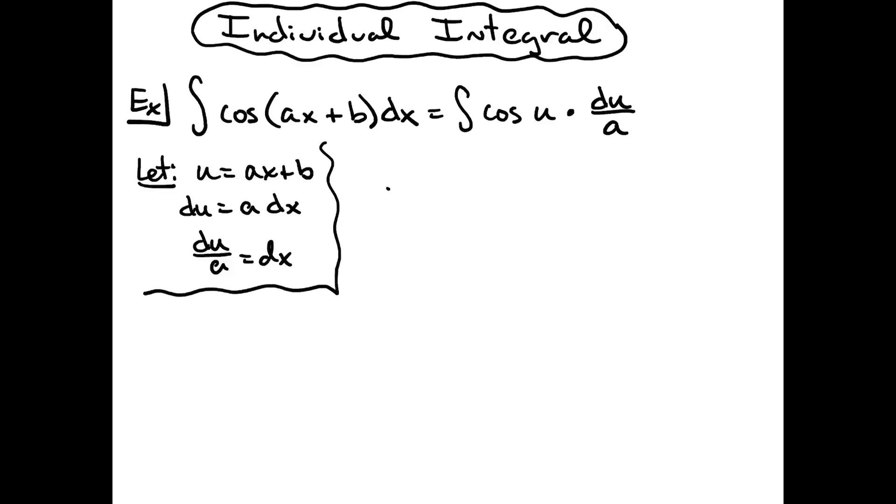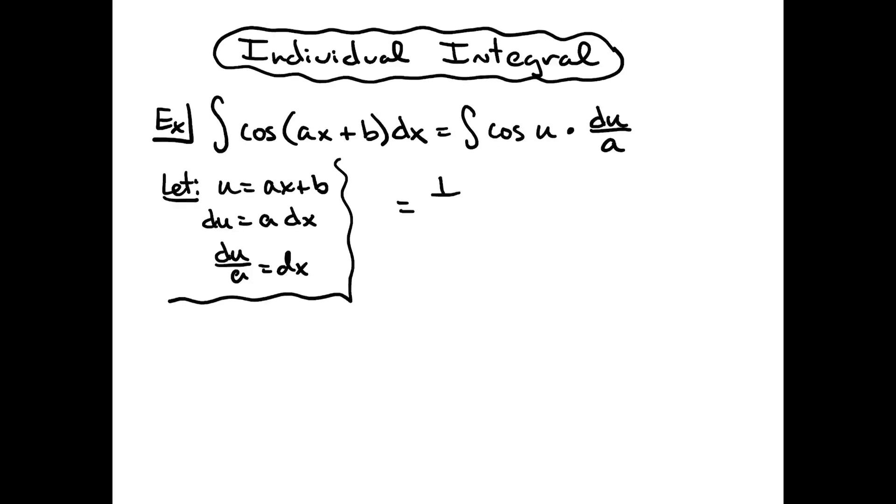At that point, I'm going to be able to see that I can pull out a 1 over a in front of the integral, so cosine u du.